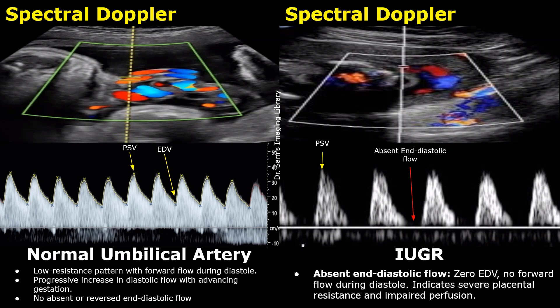Hello everyone, this is Dr. Sam, and today we will learn about umbilical artery Doppler findings in fetal IUGR and distress. Umbilical artery Doppler assessment is performed in the third trimester of pregnancy after 24 weeks to check fetal well-being. Our main focus today will be the spectral Doppler findings of the umbilical artery in normal cases and abnormal cases like growth restriction and fetal distress.